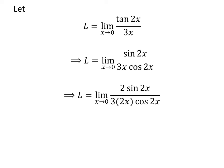As multiplying the numerator and the denominator of a fraction by a common factor do not change the value of the fraction, let us multiply the above fraction by common factor 2. So L is equal to limit of 2 times sine of 2 times x upon 3 times 2 times x times cosine of 2 times x as x approaches 0.